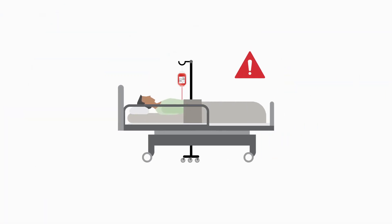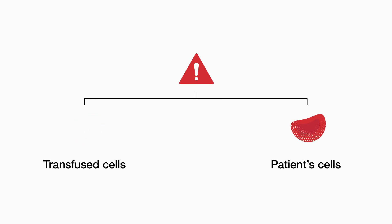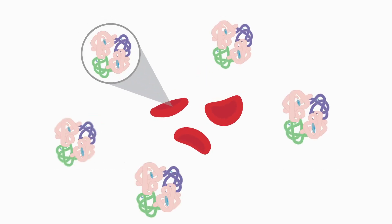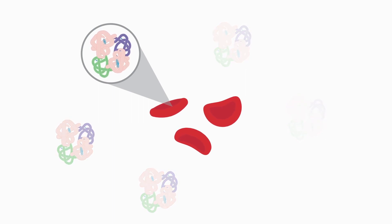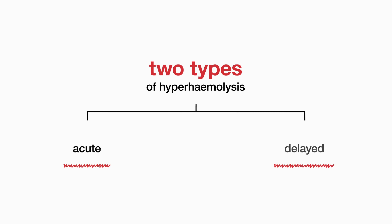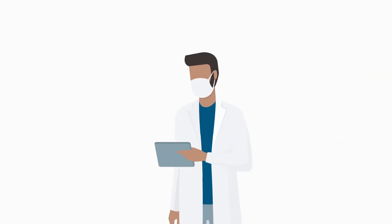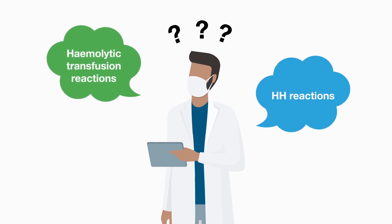Patients with haemoglobinopathies are also at increased risk of hyperhemolysis. This is a severe, life-threatening transfusion reaction with worsening haemolysis affecting transfused red cells and the patient's own red cells. It results in a reduction in the patient's haemoglobin to below pre-transfusion levels, which is often associated with a reticulocytopenia. There are two types of hyperhemolysis: acute and delayed. Differentiating hyperhemolysis reactions from other haemolytic transfusion reactions can be difficult.